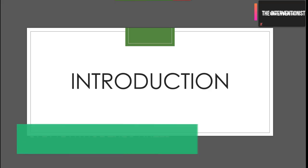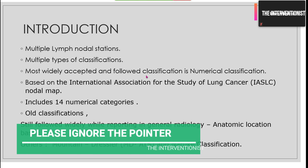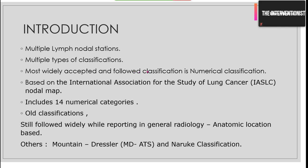We will start with a brief introduction. There are multiple lymph nodal stations and multiple types of classifications followed worldwide. The most commonly and widely accepted classification is developed by the International Association for Study of Lung Cancer — the IASLC Nodal Map — which is a 14-station numerical map of the entire chest lymph nodes. There are older classifications still followed widely in radiology, including anatomy-location-based classification, except for cancer staging purposes.